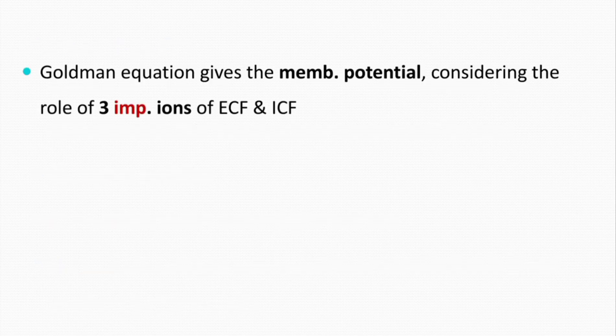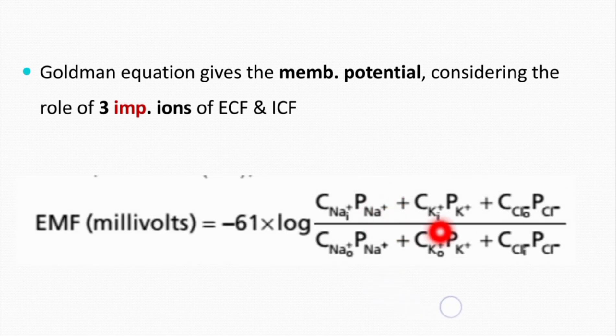The Goldman equation gives us the value of the membrane potential when the membrane is permeable to multiple ions simultaneously. It considers three important ions of the ECF and ICF: sodium ions, potassium ions, and chloride ions. Using this equation we can calculate the actual resting membrane potential, which reflects the true situation in the body, making the Goldman equation very useful.